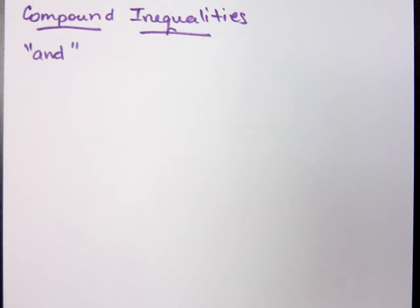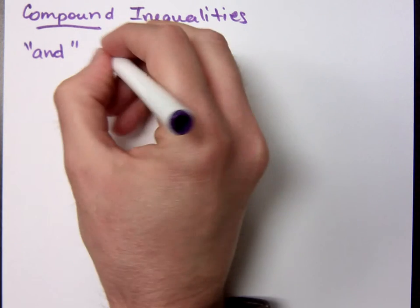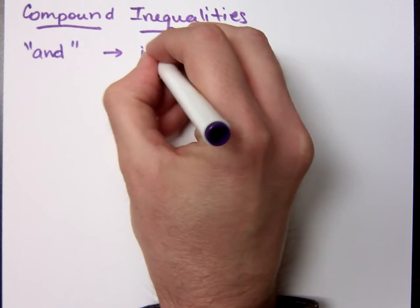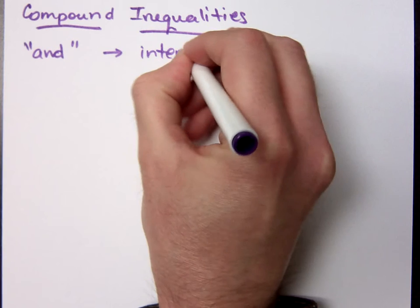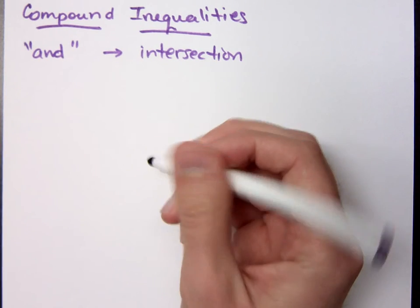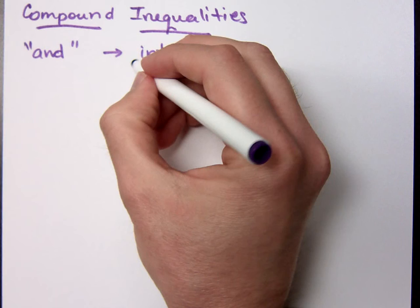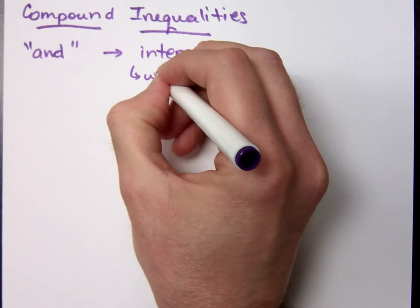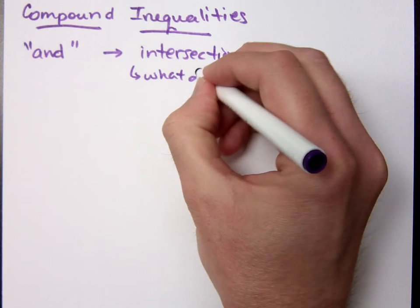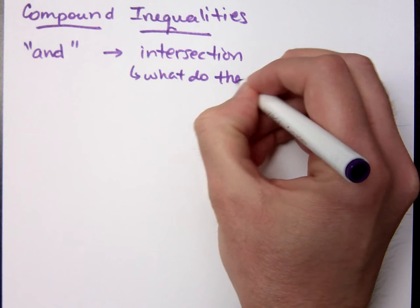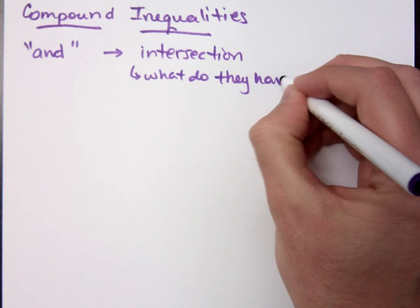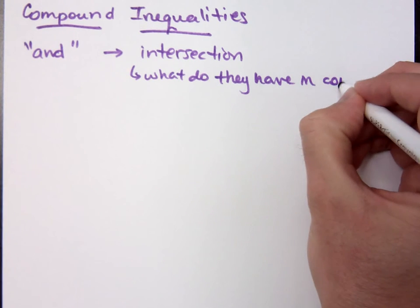Sometimes you'll see inequalities and you'll have the word 'and' between them. When we see the word 'and', that means we're talking about an intersection. With an intersection, you're basically looking for what do the inequalities have in common?